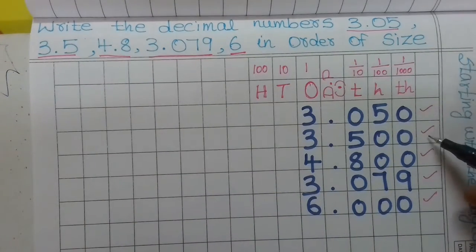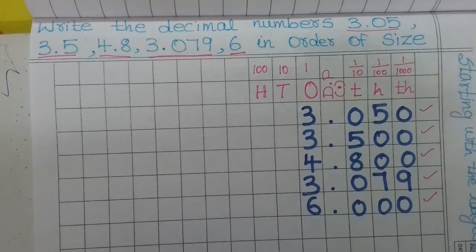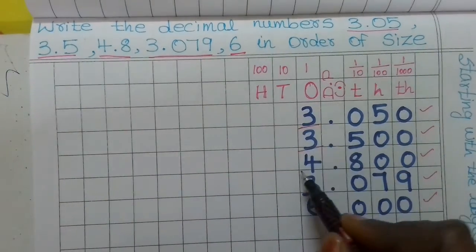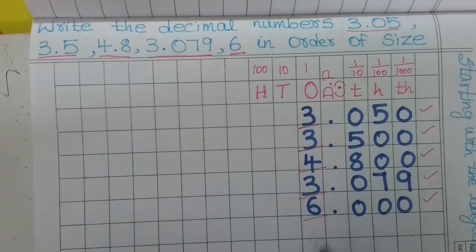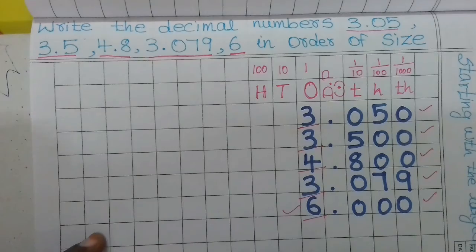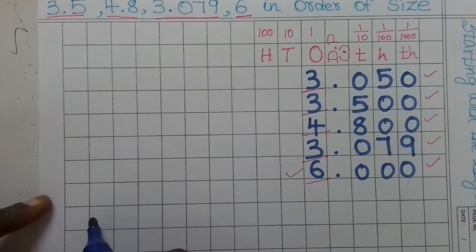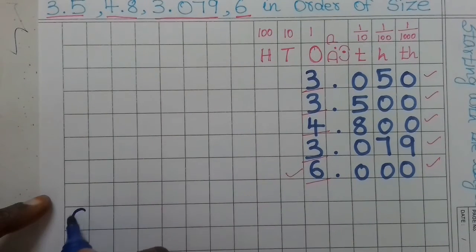Now we can compare. We compare the whole number part first to find the largest. The whole numbers are: 3, 3, 4, 3, and 6. So 6 is the largest — that is our first number. Next greatest whole number is 4, so 4.8 is next.